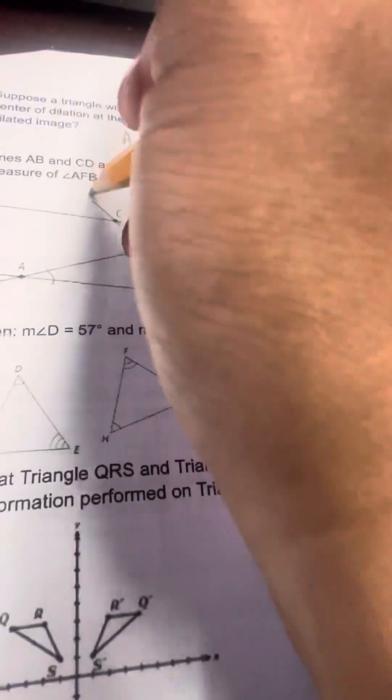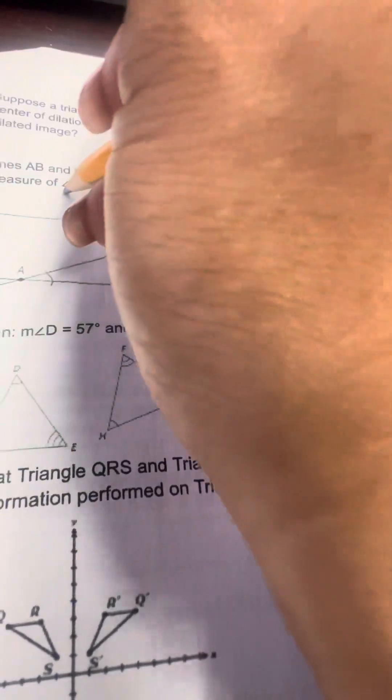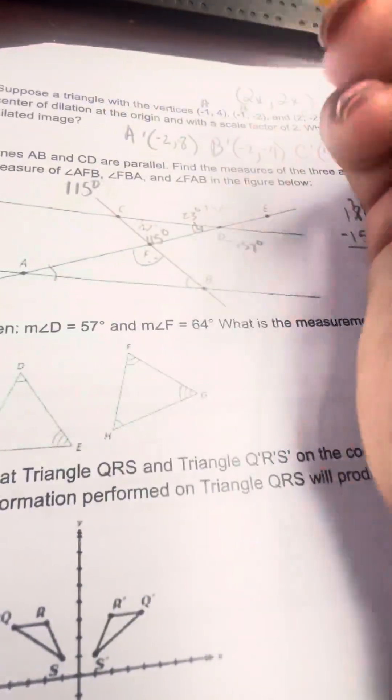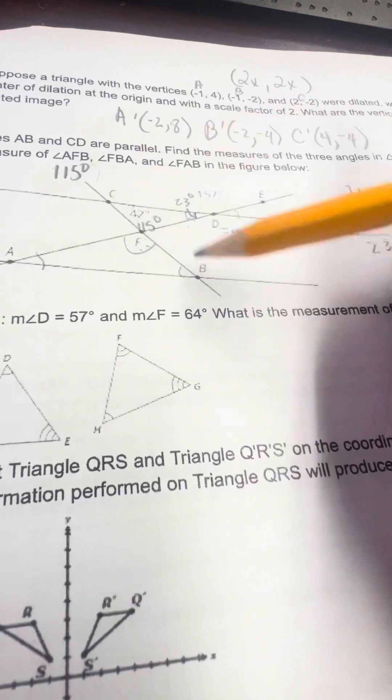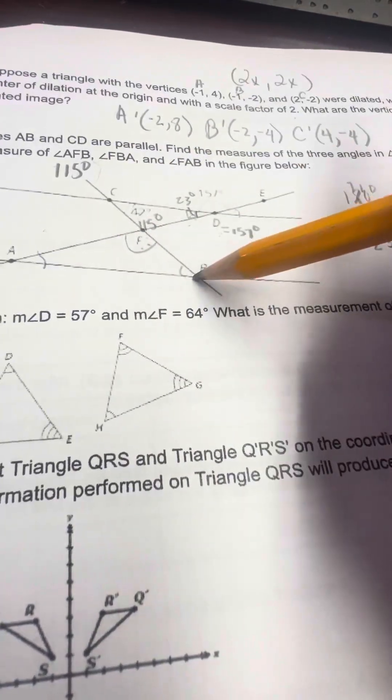So this one, angle AFB is 115 degrees. Angle FBA, which is this one, FBA, this angle here.